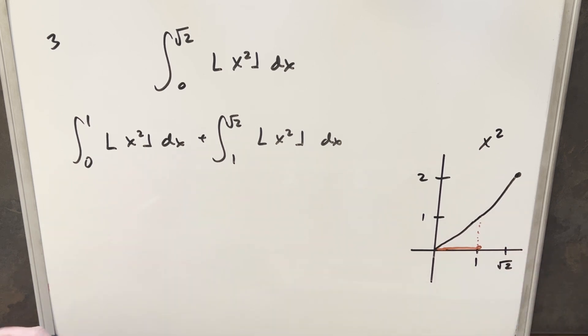So what we can do is come back to our integral and just look at the first one from 0 to 1. All the values are 0, so we're integrating 0. So this piece is just going away, and it's going to be nothing.